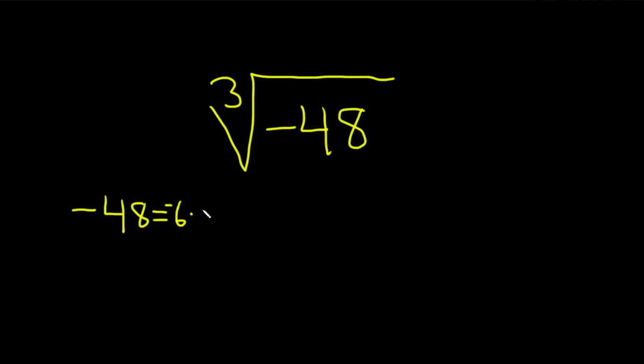So I'll have our negative here. This is negative 3 times 2, and then 8 is 2 cubed. Basically, you're writing it as a product of primes.